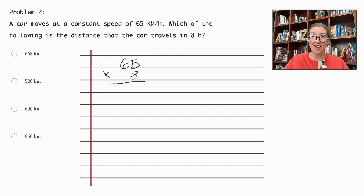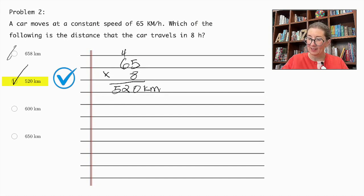8 times 5 is 40. 8 times 6 is 48. Plus the 4 is 52. So our total is 520 km traveled. There you have it.